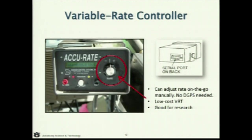A lot of rate controllers — this is just one example — allow me to go across that field and just turn the knob and adjust the rate right on the go. I don't need GPS or much else. I can do strips: a low nominal rate, a high rate, and look at my yield map. If they stand out, then I'll probably want to look a little closer into my variable rate program.